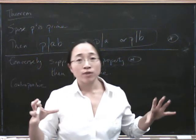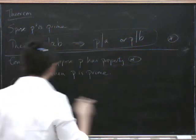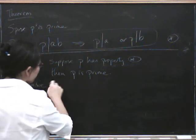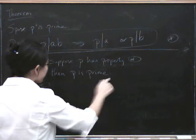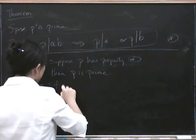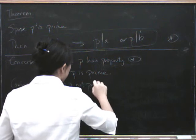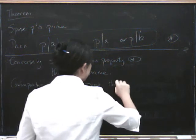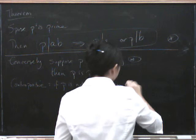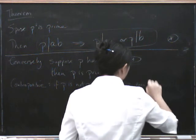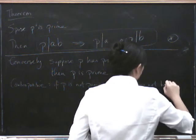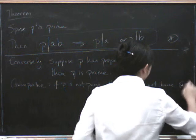And it's exactly equivalent to the thing that we started with. So the contrapositive is, suppose p is not prime, if p is not prime, then p does not have this property, does not have the property star.